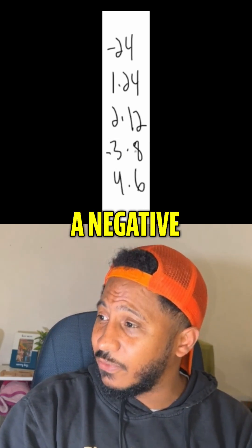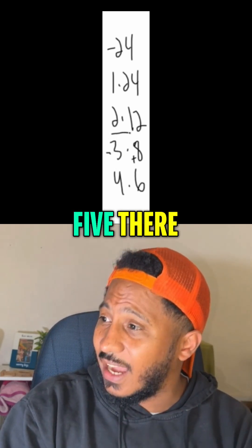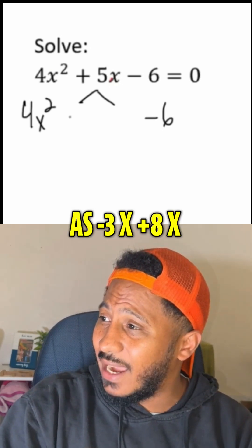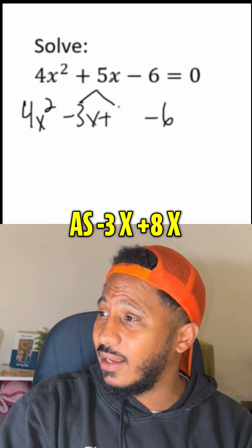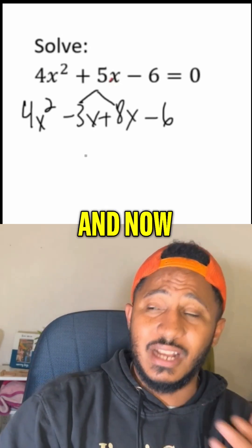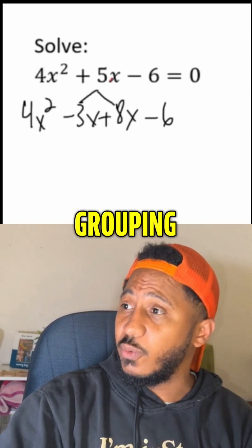That means we need a negative three and a positive eight since we have a plus five there. So we write this as minus 3x plus 8x. Now instead of three terms, we have four terms, and we factor four terms by grouping.